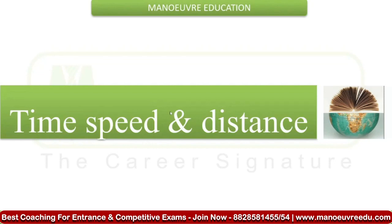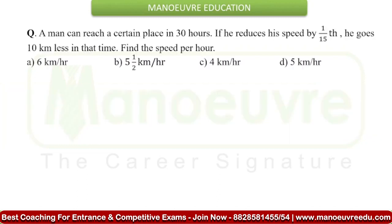Hello everyone, welcome to Manual Education. Here I am with Quant Kajo's Exalros, and today we will solve a question from time, speed and distance. We have: a man can reach a certain place in 30 hours. If he reduces his speed by 1/15th, he goes 10 km less in that time. Find the speed per hour.